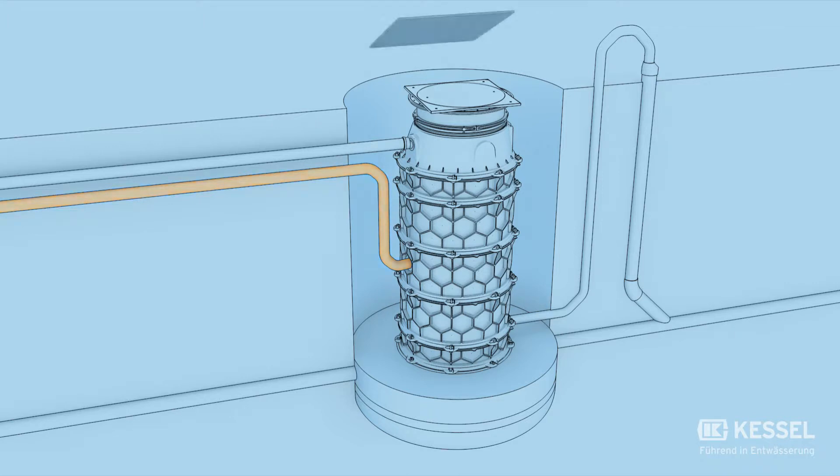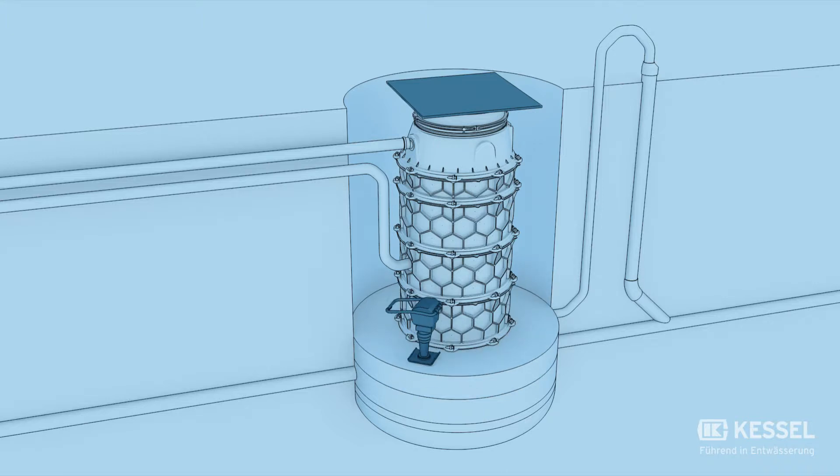In the next step, we cover the equipment shaft. Then we fill the pit layer by layer. Fill and compress layer by layer with a suitable filler material in accordance with the installation and operating manual.